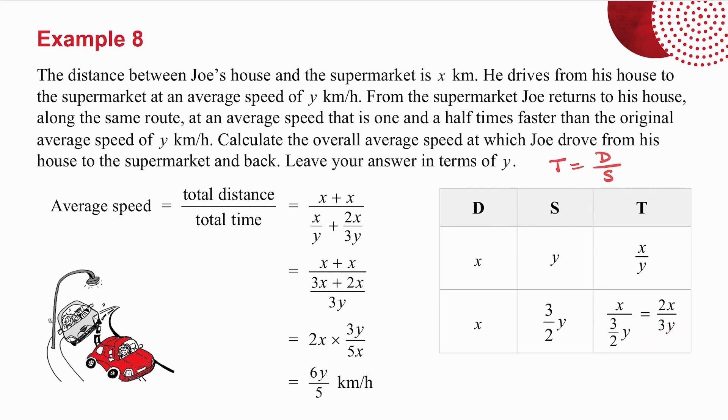The question says to you, calculate the overall average speed. Now to find average speed, you cannot just get the averages of the two speeds. It doesn't work that way. And the formula you've got to use is very, very important. So the average speed is the total distance divided by the total time.